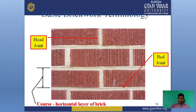Now discussing types of brick bonds. If we make a wall, we can use header bond or bed joint. These are header joint or bed joint bonds. If we make a wall, we can use them accordingly.